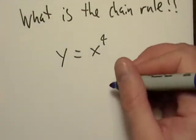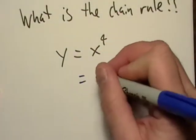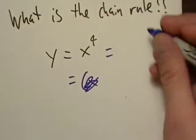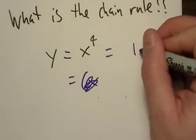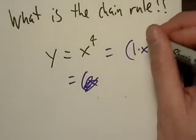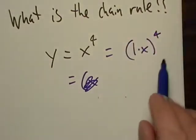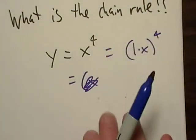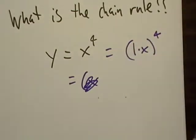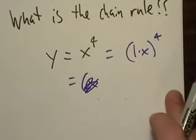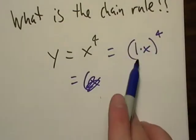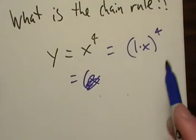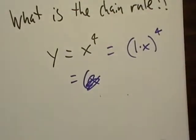I'm going to treat this one as 1x raised to the fourth. So on the whole, I've got a function raised to the fourth power, an exponential function, and then on the inside, I've got a linear function. I'm going to just kind of pretend like it's two functions.